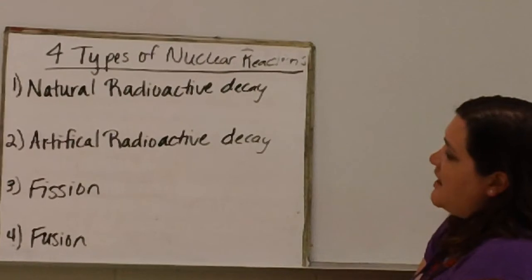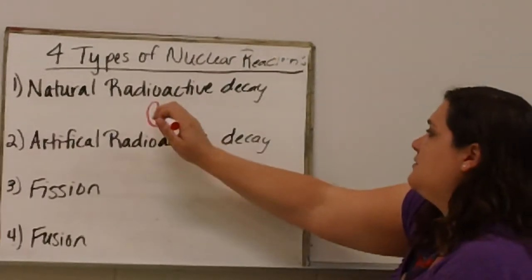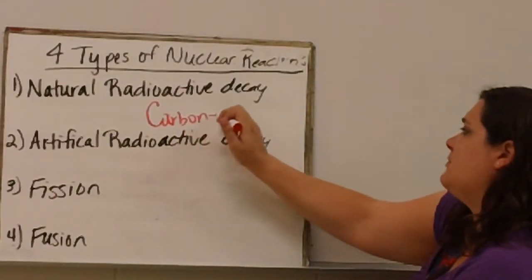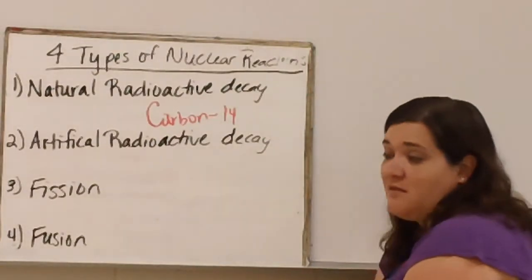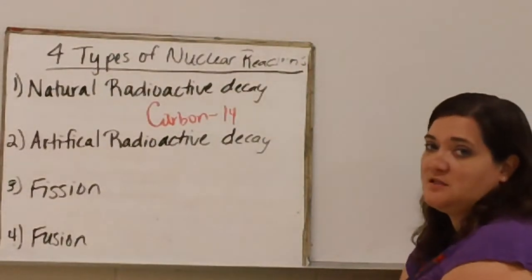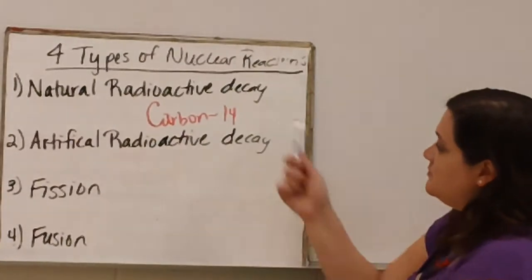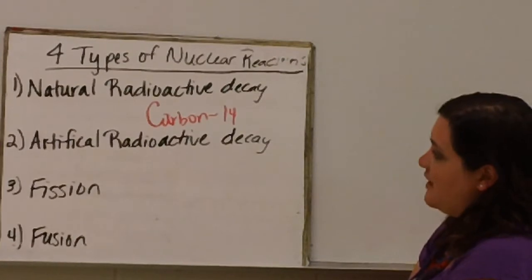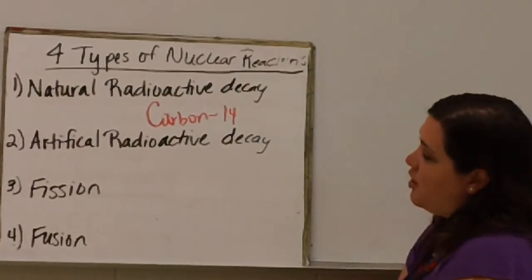Natural radioactive decay is going to be like carbon-14. Carbon-14 is present in every living thing. When living things die, then the carbon-14 begins to decay away. And so you end up with radioactive decay naturally. And that is how we can also tell how old things are through carbon-14 dating.